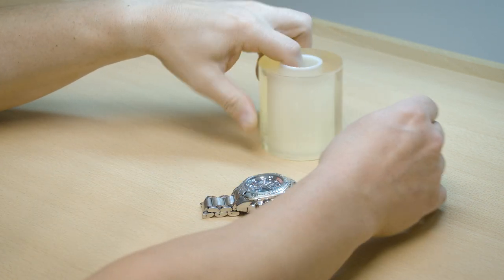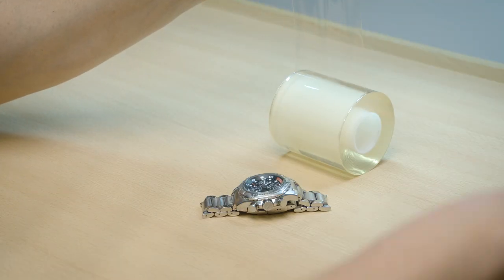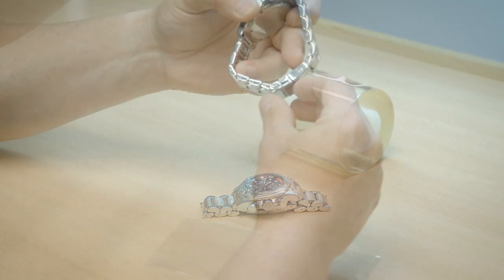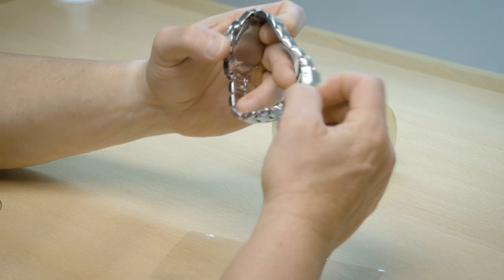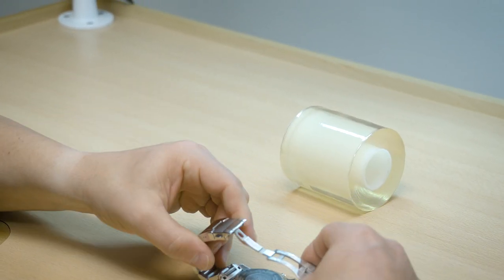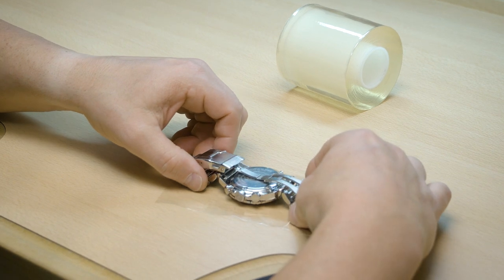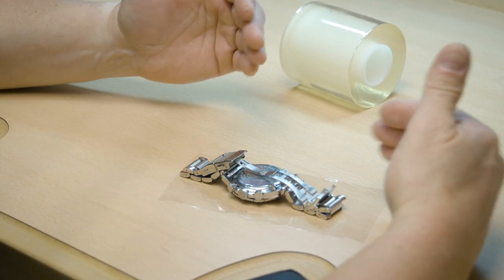You can also, I like to do is you take a piece, cut it off. So if you're working on a watch, you can actually lay it down on top of here and it's non-skid. It won't move. So you don't have to worry about your watch moving all over your bench top.